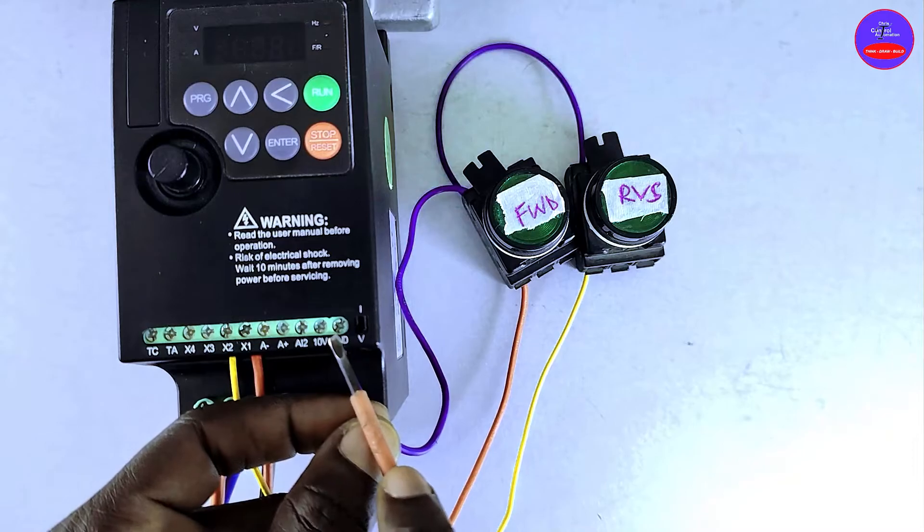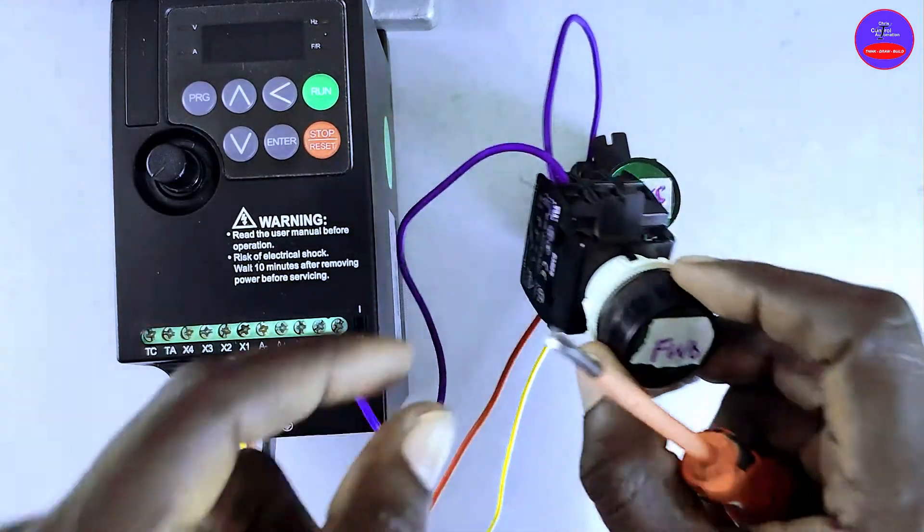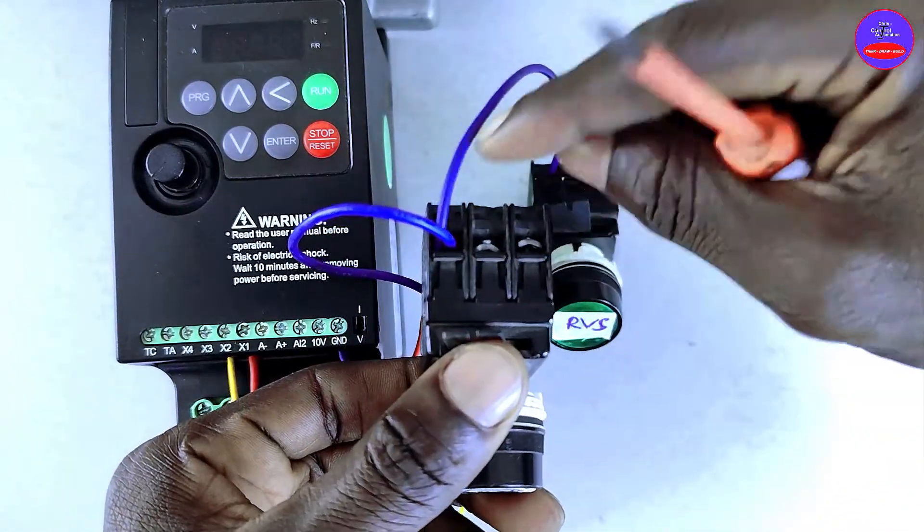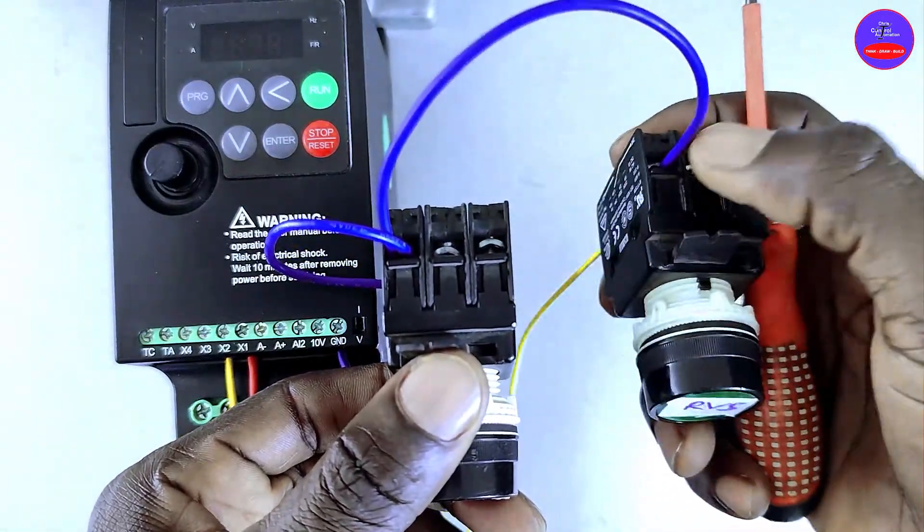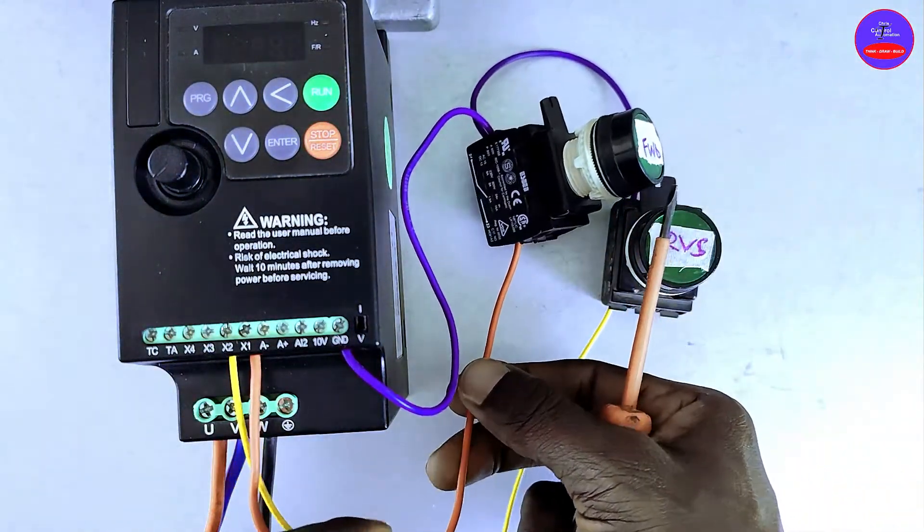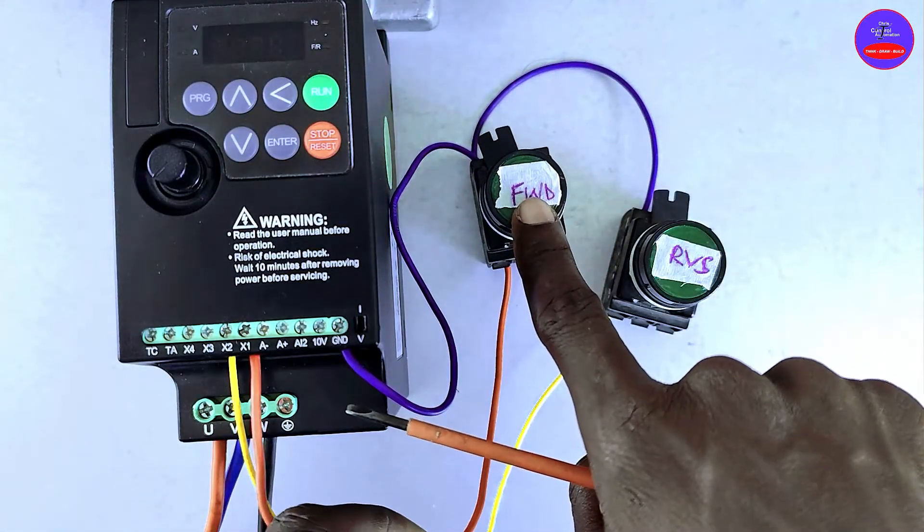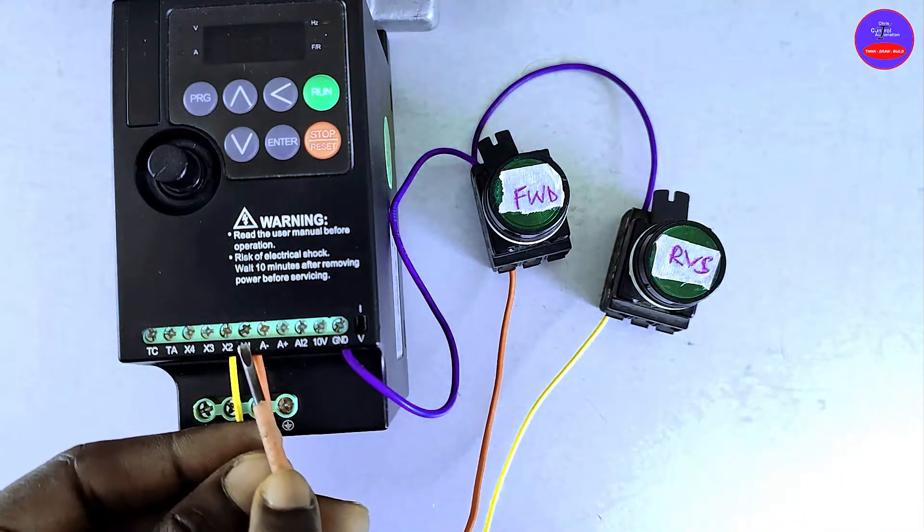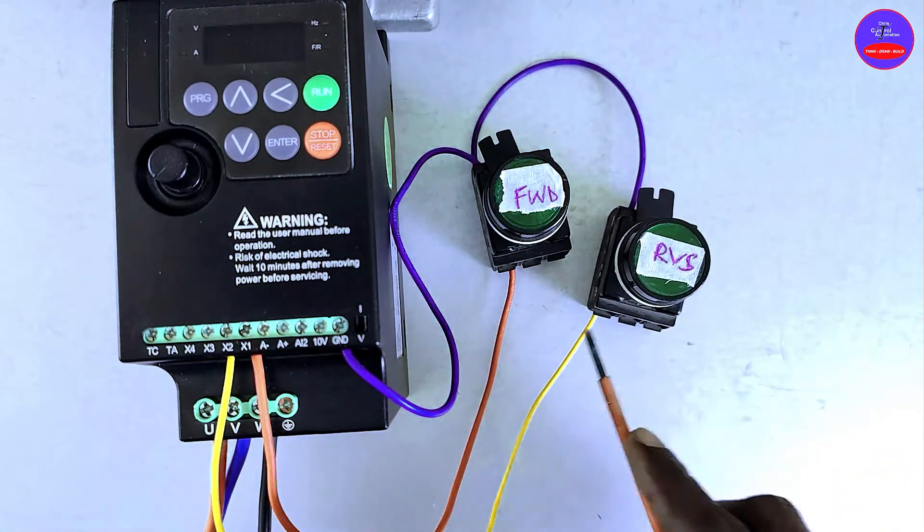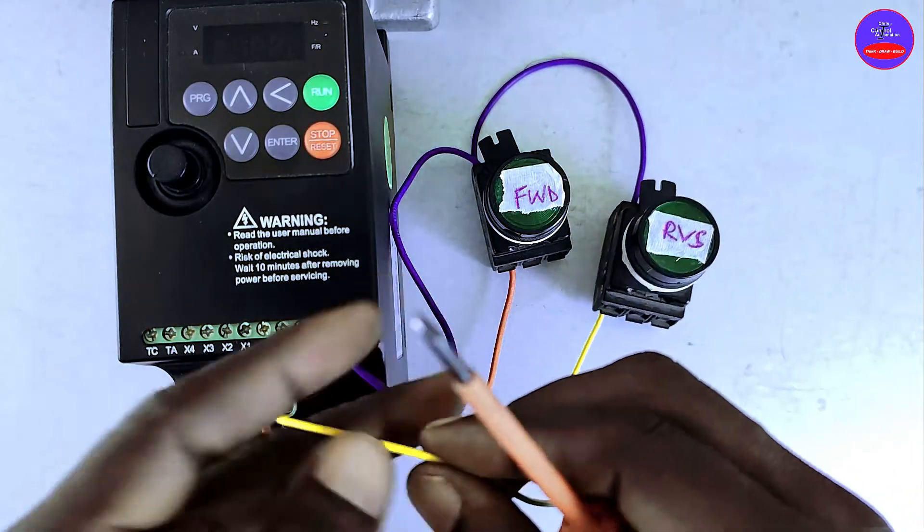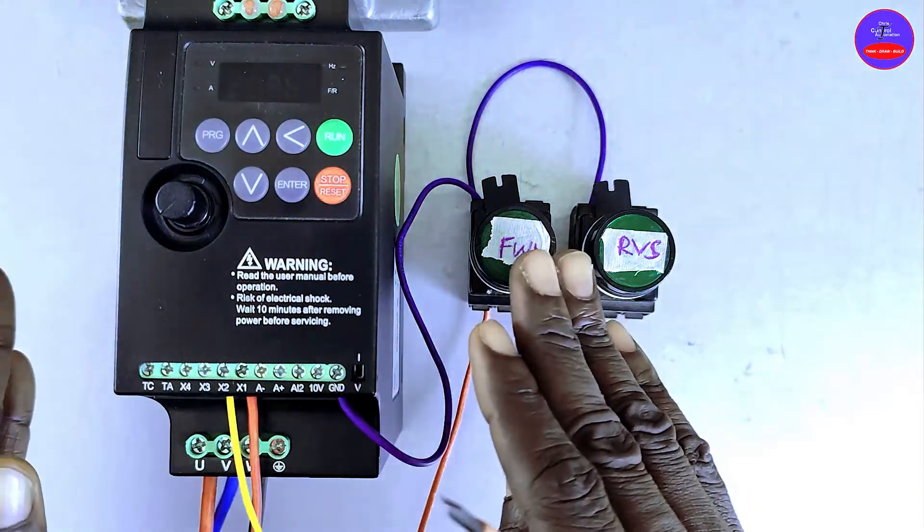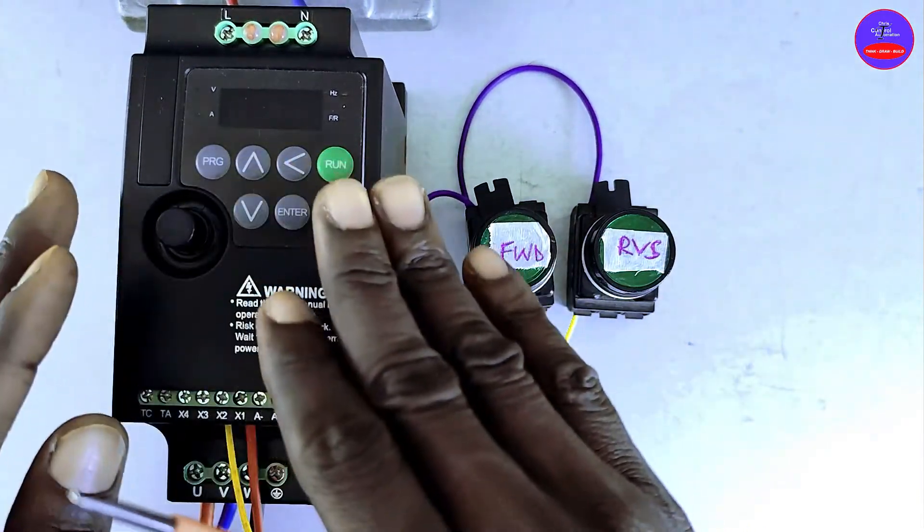We tap from the negative terminal on the drive to one side of the forward push button. We tap from the same place to one side of the reverse push button. The red cable comes from the other side of the forward push button and connects at X1 terminal. The yellow cable comes from the other side of the reverse push button and connects at terminal X2. This is the connection. Let's run the drive and program it.